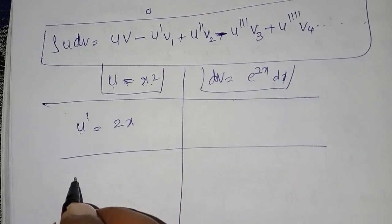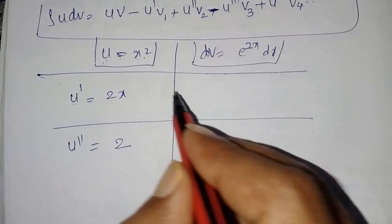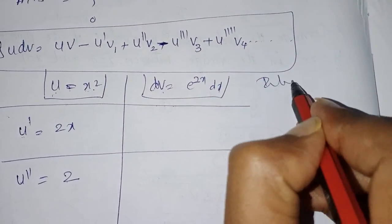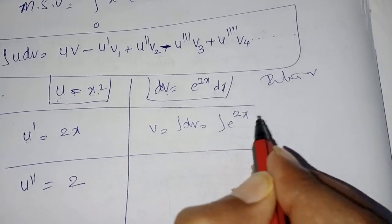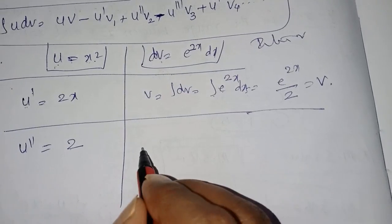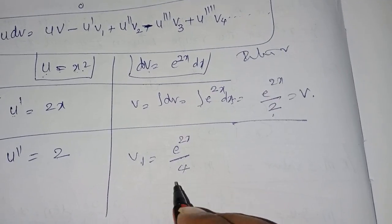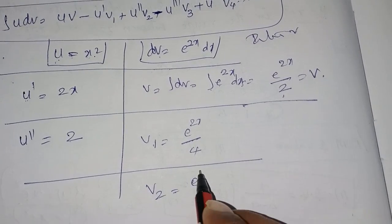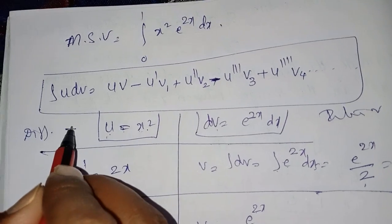For the integrable terms: v = ∫e^(2x)dx = e^(2x)/2. Then v₁ (integration of v) = e^(2x)/4. Then v₂ (integration of v₁) = e^(2x)/8. Now we substitute u = x², u' = 2x, u'' = 2, v = e^(2x)/2, v₁ = e^(2x)/4, v₂ = e^(2x)/8 into the Bernoulli's rule formula.